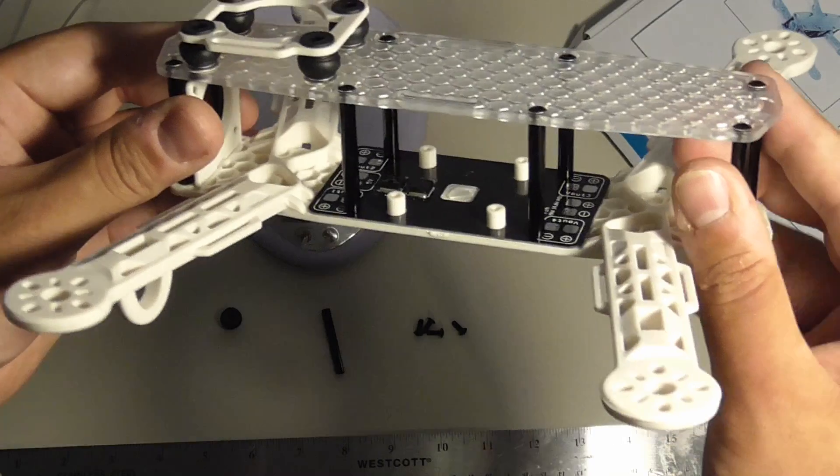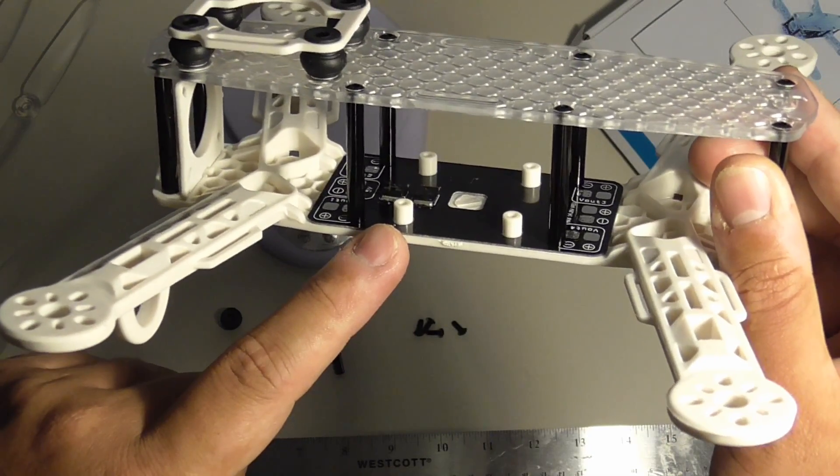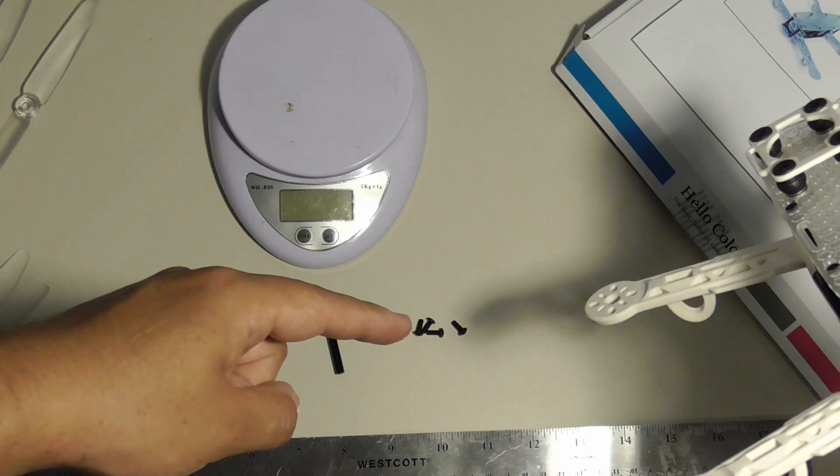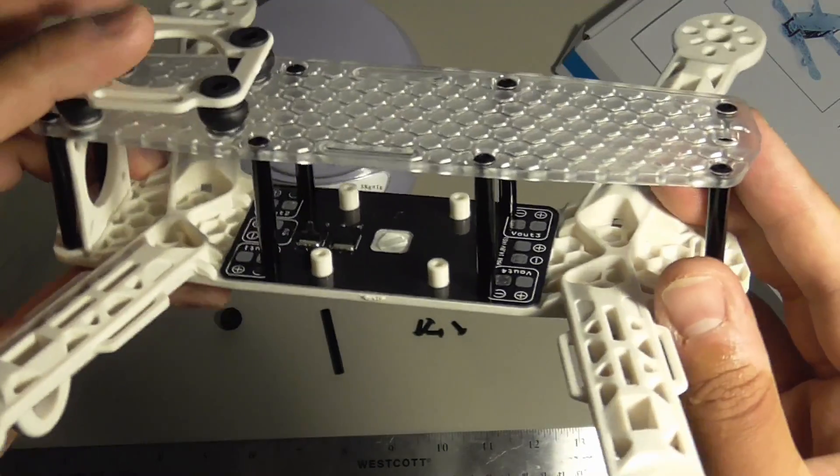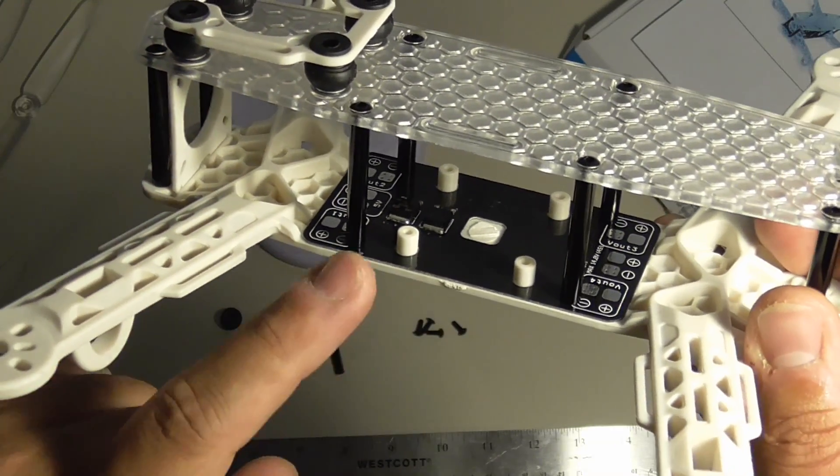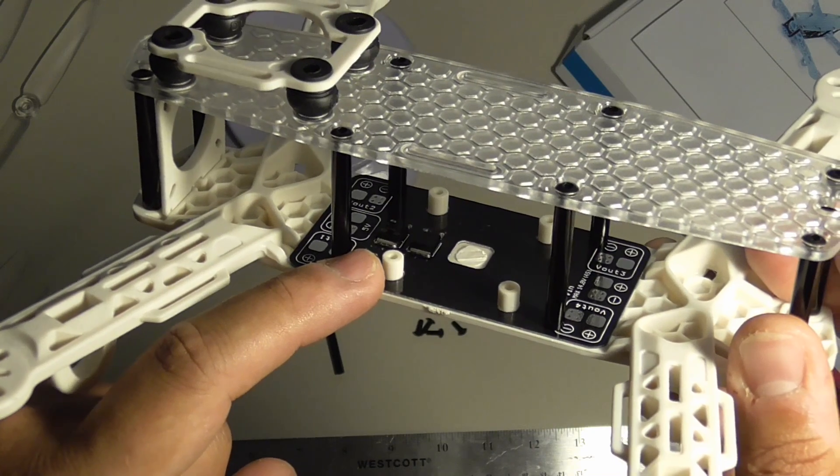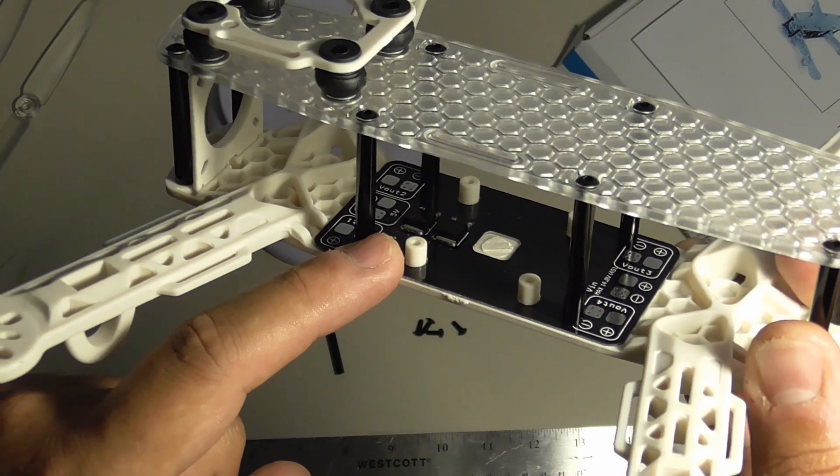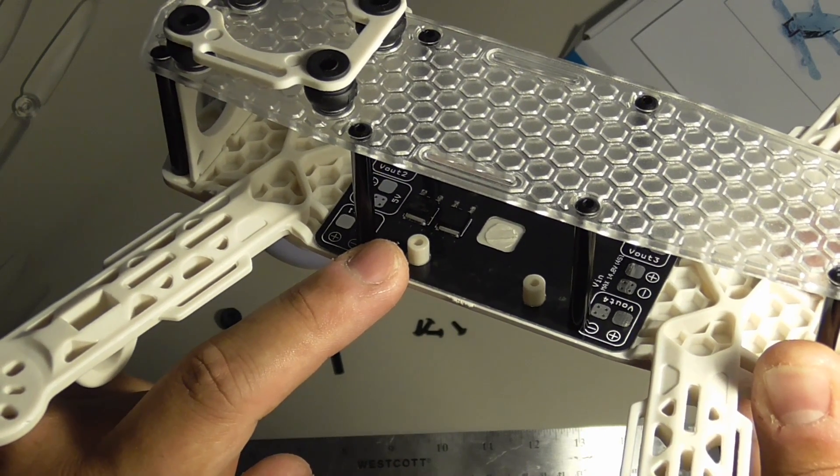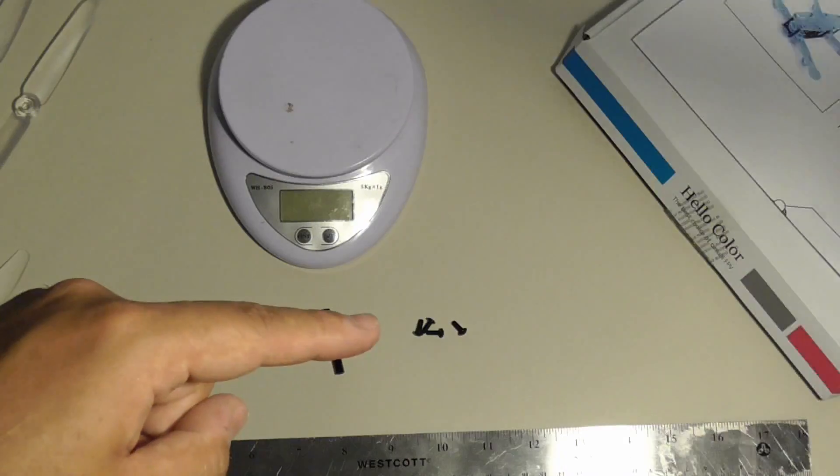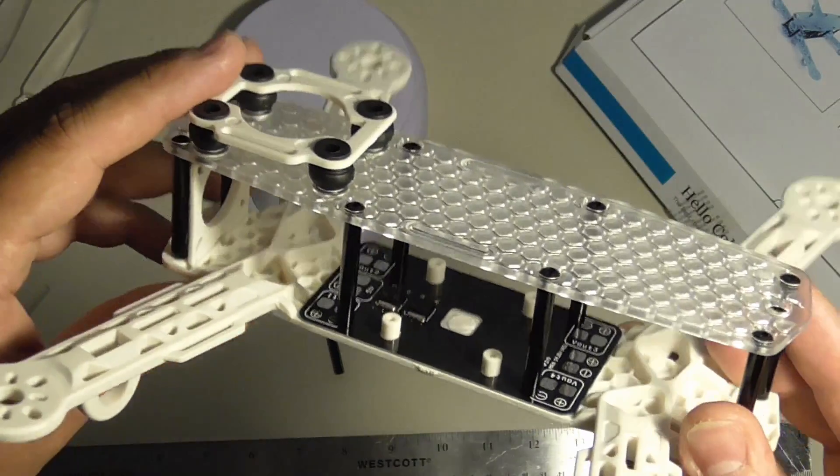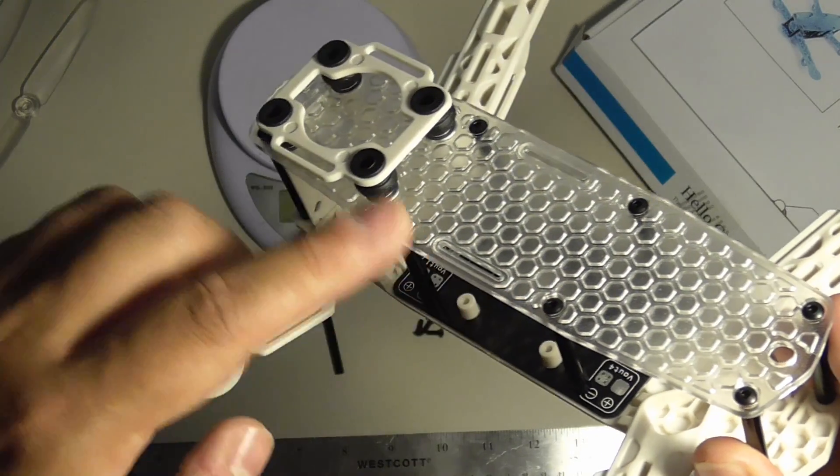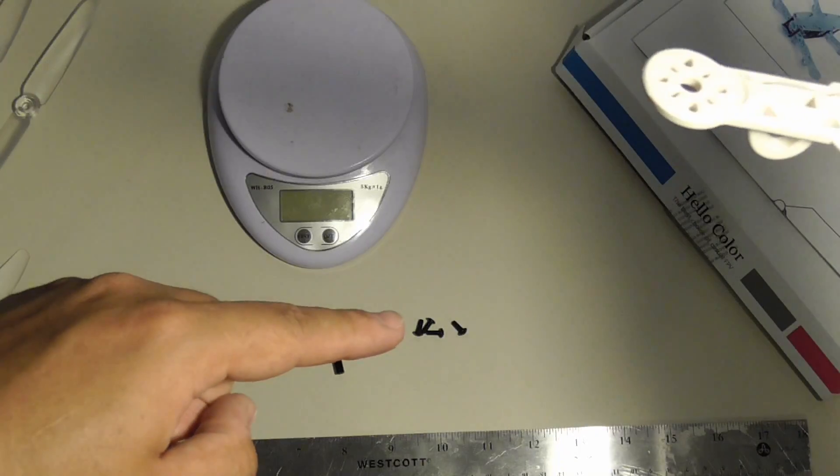Something I forgot to mention is the frame has four posts where the flight controller goes. And there are four extra M3 8mm long machine screws. Now, it doesn't say in the instructions, but I assume those screws are for these posts. The posts aren't threaded. There looks to be about a 2.5mm hole inside. And I think you're supposed to use these machine screws in there. The screws are the same ones that go around the perimeter. There's a total of 20 included. 16 for the frame and the four extra ones.